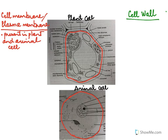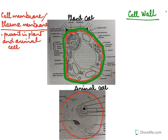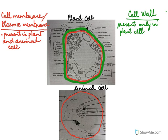Now we go to the next point — the cell wall. This green structure that I'm highlighting is the cell wall. The cell wall is not present in the animal cell. So one key difference: the cell membrane is present in both plant and animal cells, but the cell wall is present only in the plant cell.